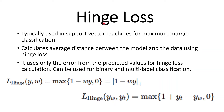Hinge loss. Hinge loss is typically used in support vector machines for maximum margin classification. It calculates the average distance between the model and the data using hinge loss, and uses only the error from the predicted values for its calculation. It can be used in both binary and multi-label classifications. The formula shown here is specifically for binary classification.